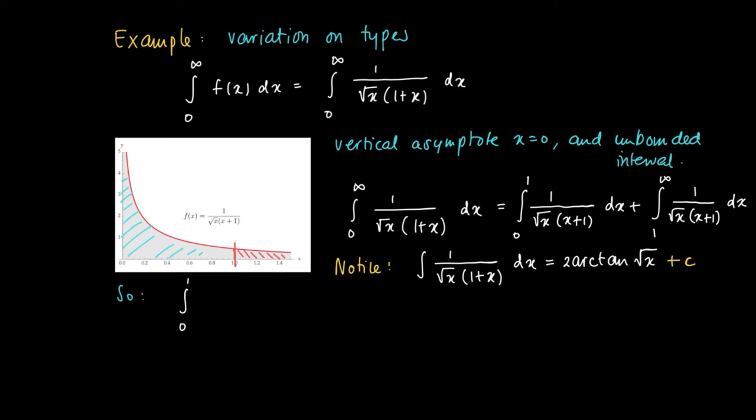We look at the left integral, the integral from 0 to 1 of f(x) dx. This equals the limit for t to 0+, since 0 is the vertical asymptote. We get the limit for t to 0+ of the integral from t to 1 of f(x) dx.